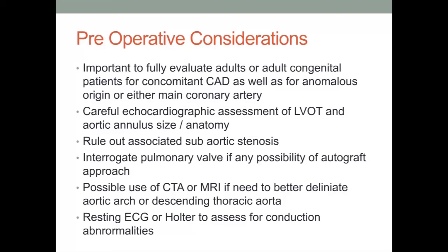Concomitant subaortic stenosis can also be identified to delineate the need for associated myectomy or myotomy interventions. In addition, echocardiographic evaluation can allow for better recognition of potential post-stenotic ascending aortic dilation as well as a thorough investigation of pulmonary valve architecture for consideration of autograft use. Mitral valve architecture and the degree of potential insufficiency should be noted as this may be altered following aortic root enlargement. Adult congenital patients in particular who may have a history of associated arch anomalies may require a CT or MRI scan to ensure that potential anatomic anomalies are well defined.